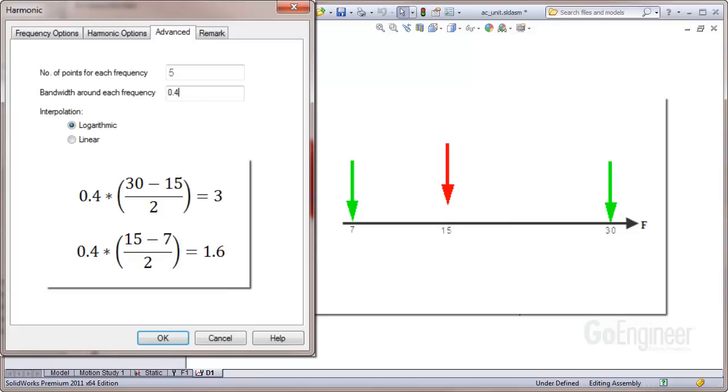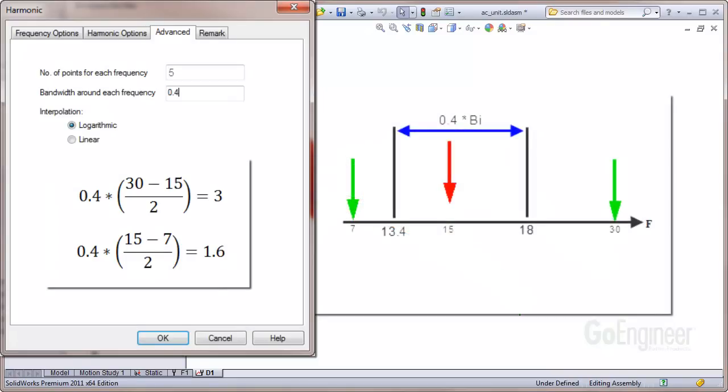Now calculate 40% of the bandwidth on the low side, or 40% of 15 minus 7 divided by 2, which is 1.6 Hz. So the starting point is 15 minus 1.6, or 13.4 Hz, and the end point is 15 plus 3, or 18 Hz. This is the 40% bandwidth calculation range around that frequency.